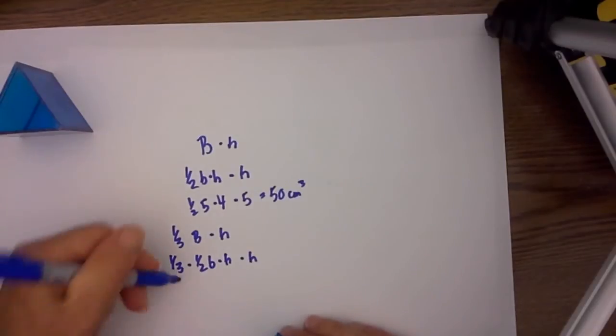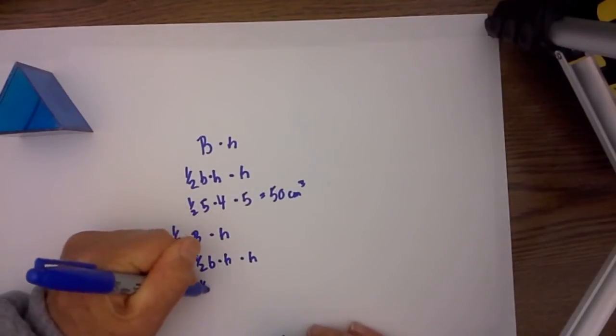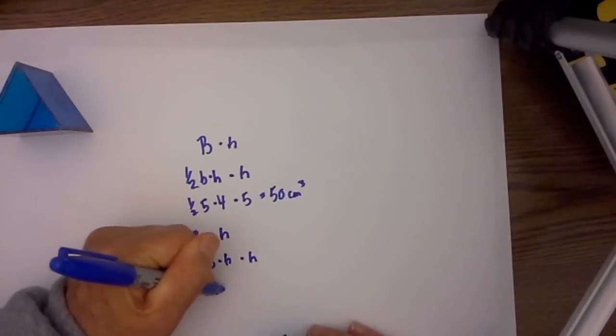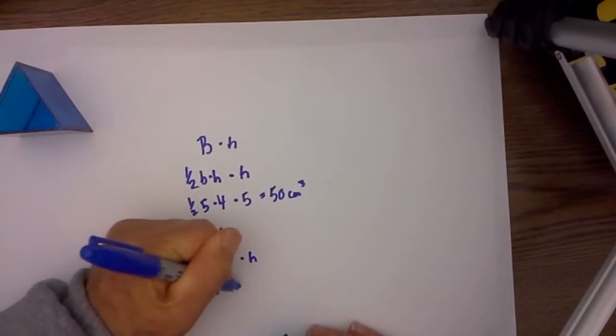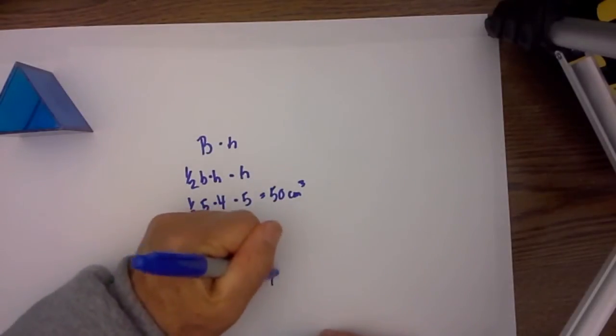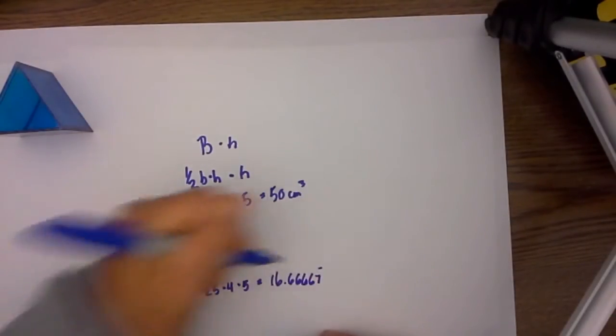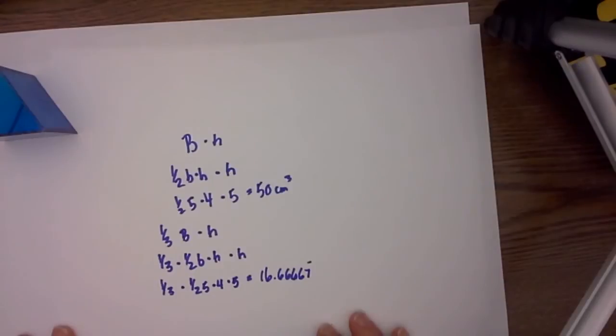So therefore it would be one third times one half times 5 times 4 times 5 and when you multiply all this out it should be one third of 50 and it is 16.66667 repeating. So that is mathematically.